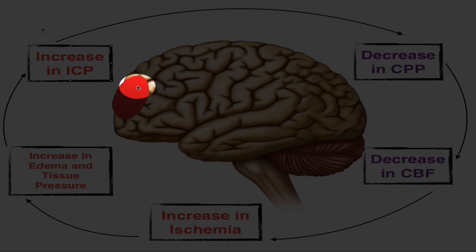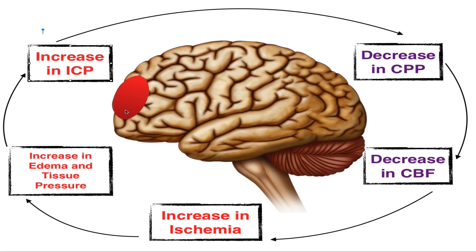This red spot here is meant to simulate some sort of injury to the brain. As bleeding occurs, brain and blood vessels are compressed, as well as cerebral spinal fluid. This restriction in blood flow causes ischemia, and swelling of brain tissue causes more ischemia. You get this nasty cycle of ischemia and edema until brain cells die.